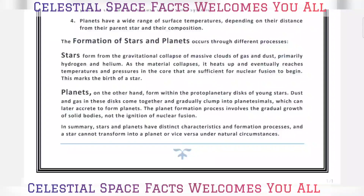Eventually the core reaches temperatures and pressures sufficient for nuclear fusion to begin — this marks the birth of a star. Planets, on the other hand, form within the protoplanetary disk of young stars. Dust and gas in the disk come together and gradually clump to form planets.